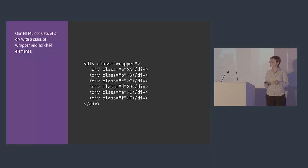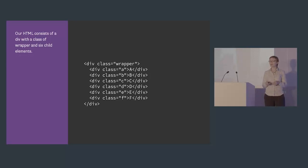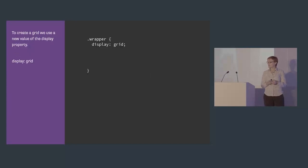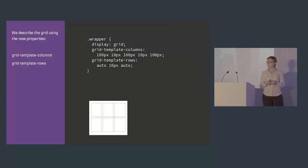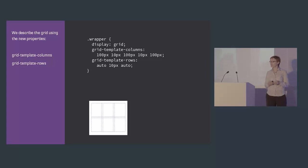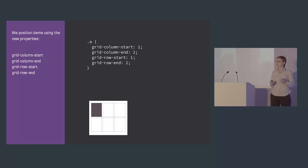Here's some HTML: I've got a div with a class of wrapper and six child elements. I'm going to declare a grid on wrapper. The first thing we need to do is say we want to use grid layout — this is a new value of the display property. We then use new properties created for CSS Grid Layout: grid-template-columns creates our grid columns — I've got three 100-pixel wide columns with 10-pixel gutters between them — and grid-template-rows creates rows. So wrapper now has a grid of three content columns, two 10-pixel gutters, and two content rows.